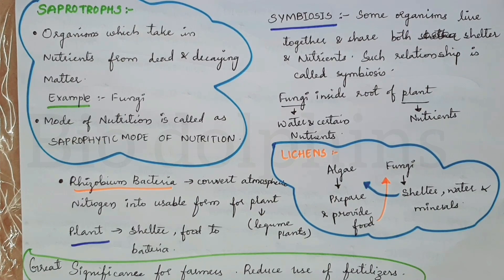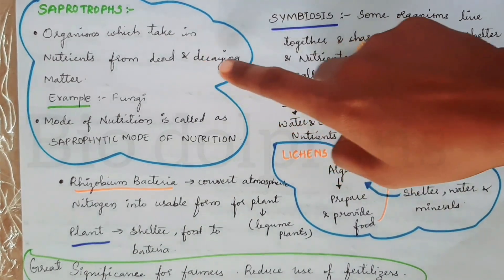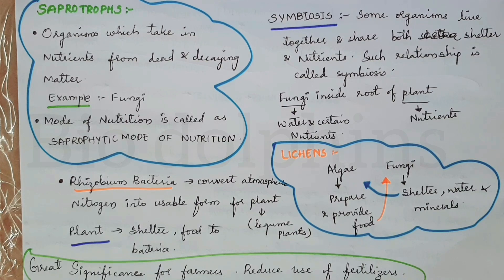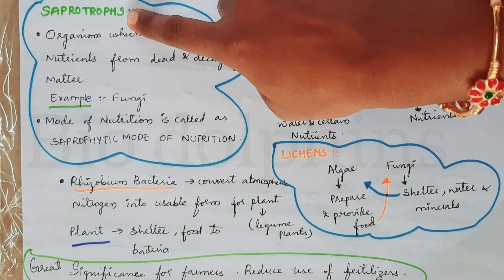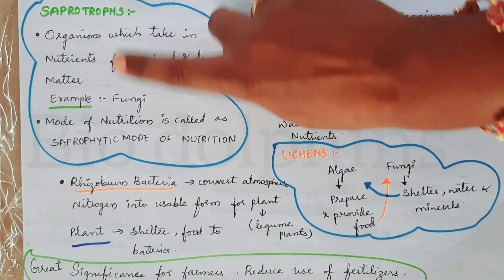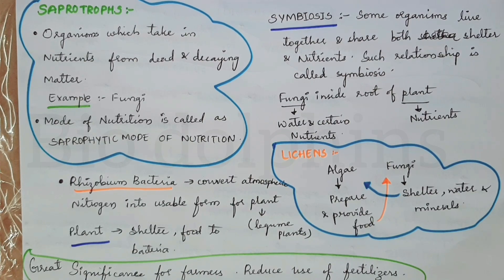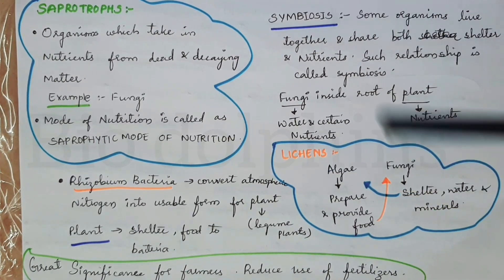Saprophytic mode of nutrition is when organisms depend on dead and decaying matter for food. These organisms are called saprotrophs. An example is fungi. This mode of nutrition is called the saprophytic mode of nutrition.